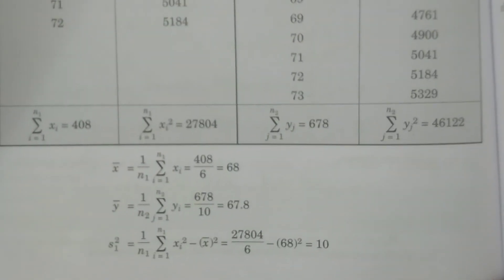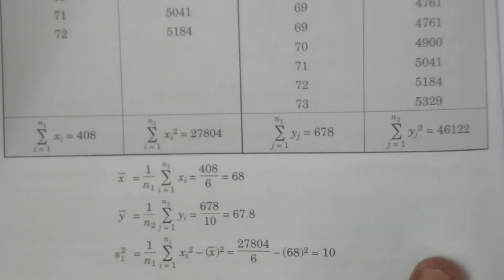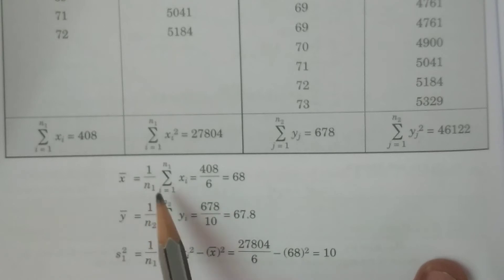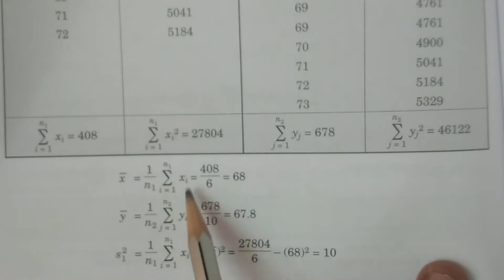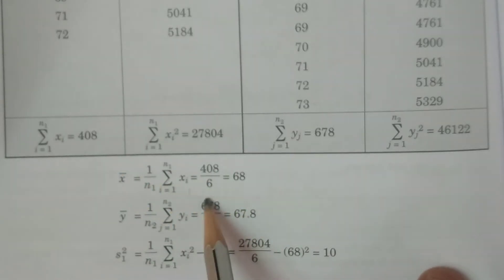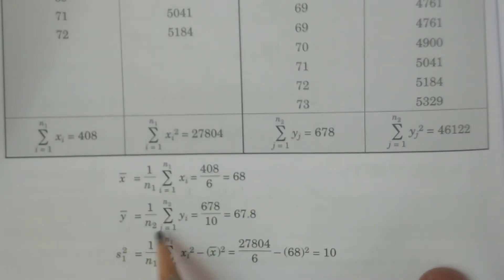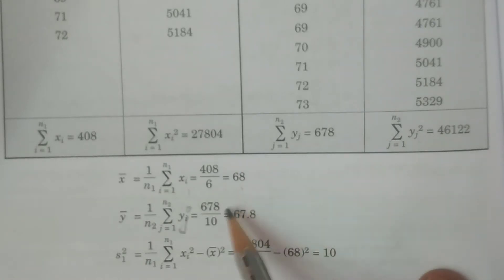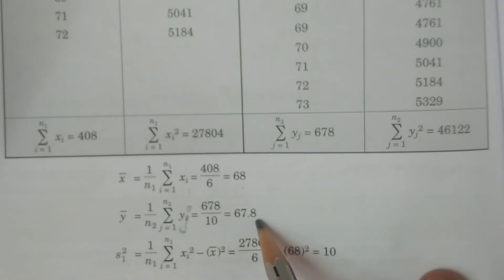Then calculate X bar. The sample mean formula is (1/N1) × summation XI. Summation XI divided by 6 gives X bar = 68. Similarly, Y bar = (1/N2) × summation YJ. Summation YJ is 678 divided by 10, giving Y bar = 67.8.